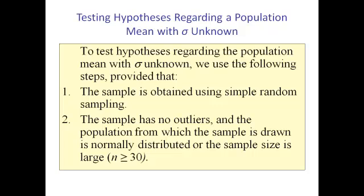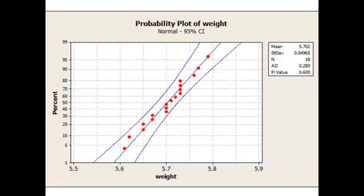Second, our test requires that the population we're sampling from is normally distributed. Now we know that if we have a large sample greater than or equal to 30, then we can relax that assumption. However, here we only have a sample of 18 quarters, so we're going to need to verify that the sample appears to be drawn from a normal distribution. So I'm going to put this data in Minitab, which gives me the following normal probability plot.